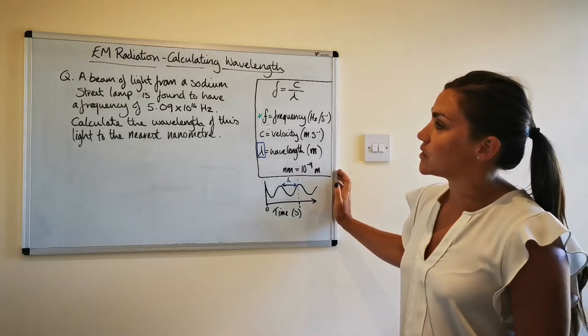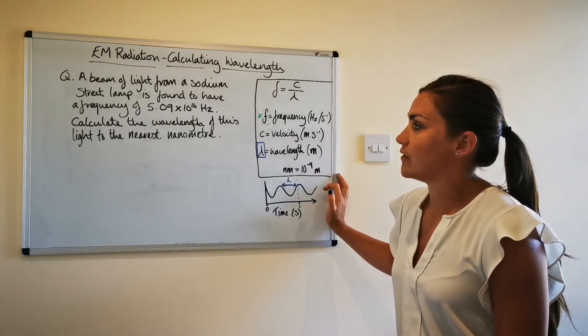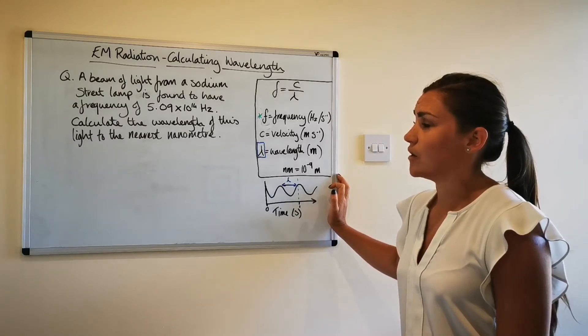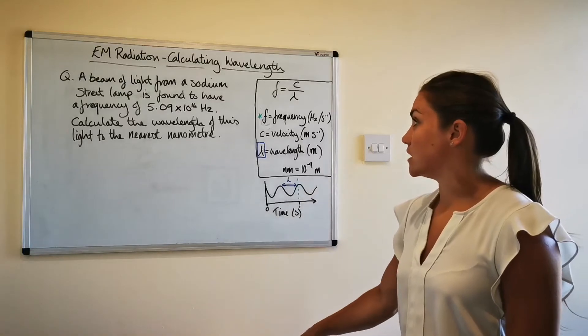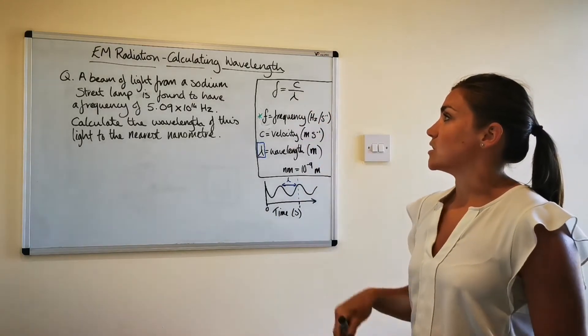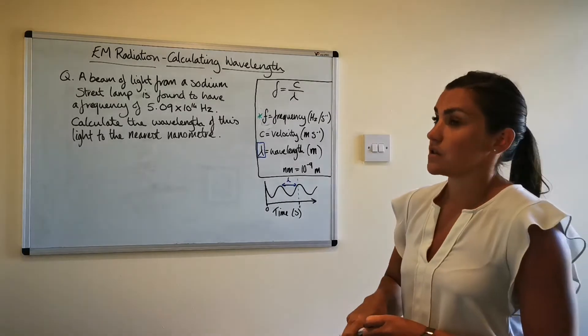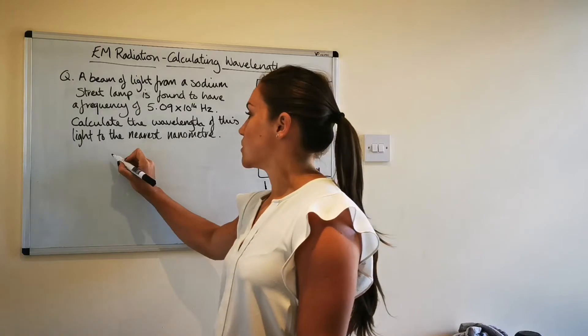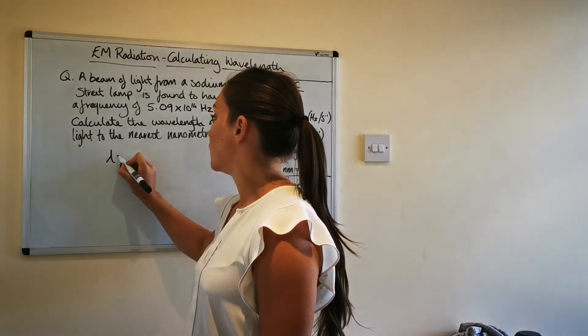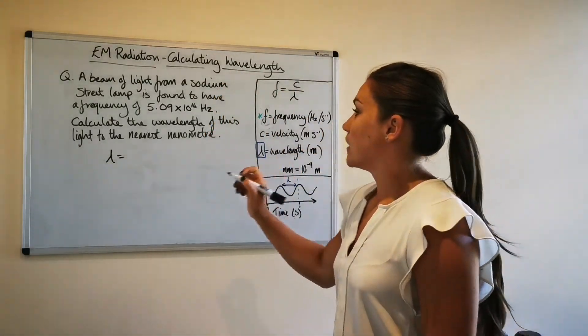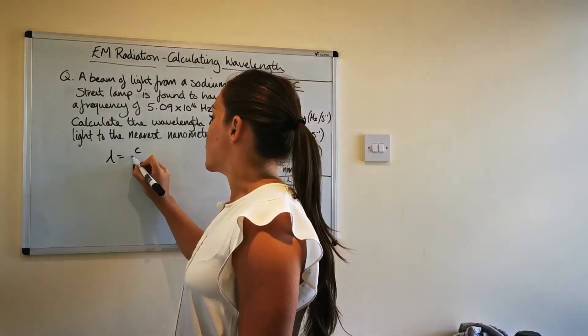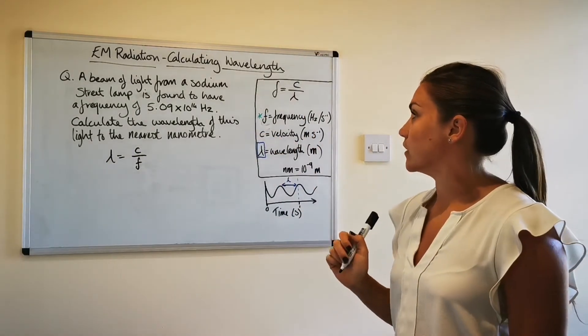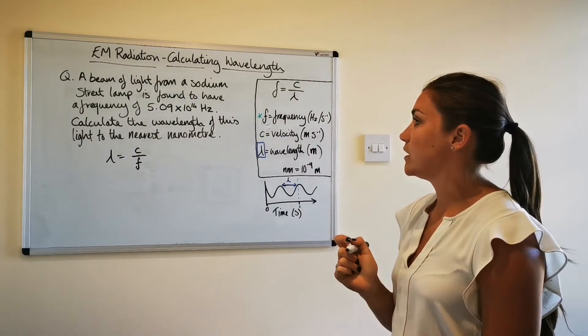So if we look at this question then a beam of light from a sodium street lamp is found to have a frequency of 5.09 times 10 to the 14 hertz calculate the wavelength of this light to the nearest nanometer so the way the equation is just now it's got frequency equals and I obviously want a lambda equals so we're just going to do a bit of changing the subject go back to your national five maths days so wavelength is equal to velocity over frequency it's all done is swap the f and the lambda around there.